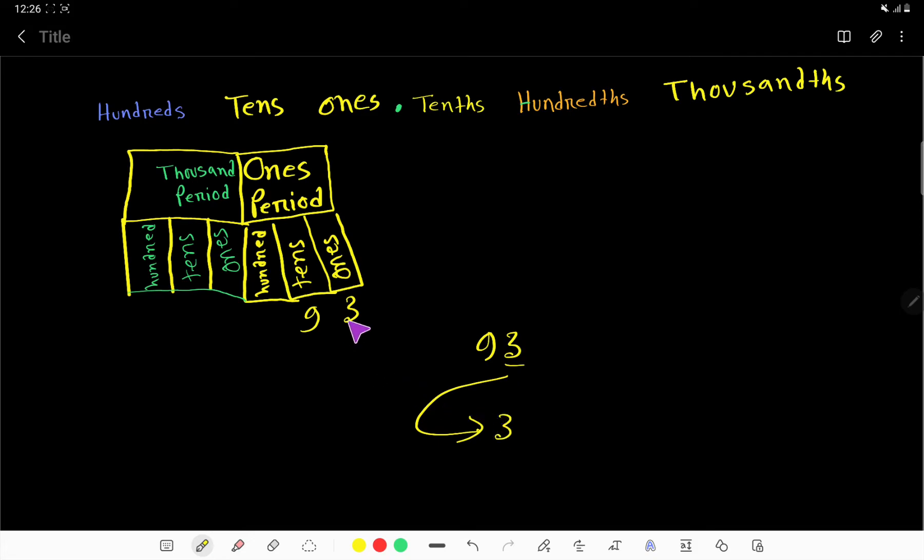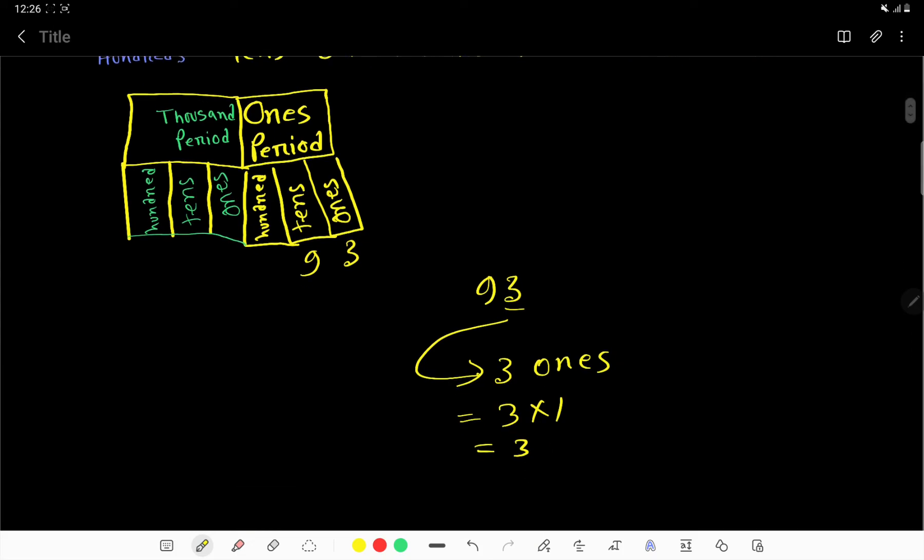And then we have to multiply this face value by the position occupied. So 3 has occupied the ones position, so we can write 3 ones. This means 3 times 1, that is 3. So the place value of 3 is 3.